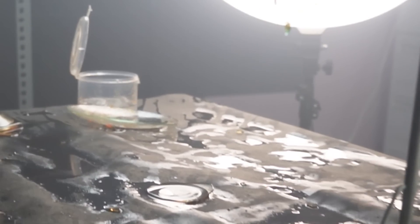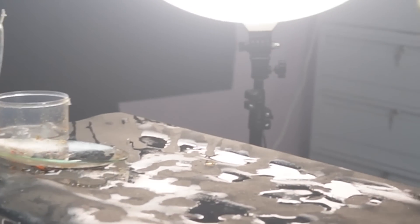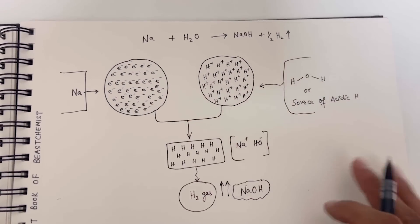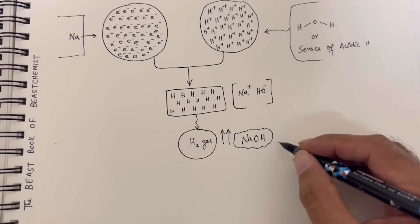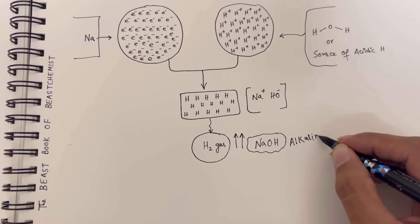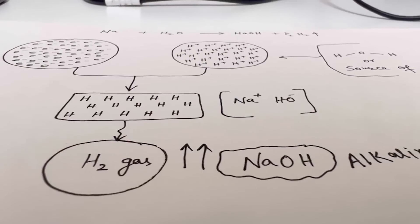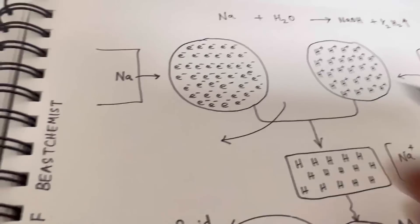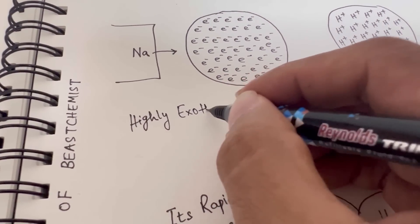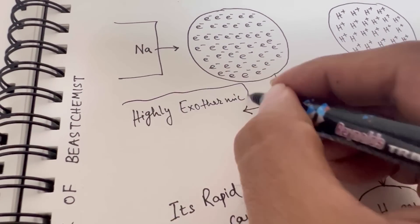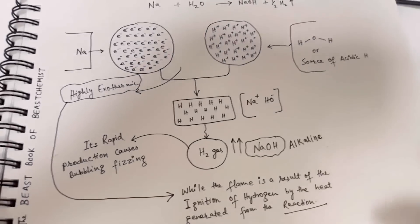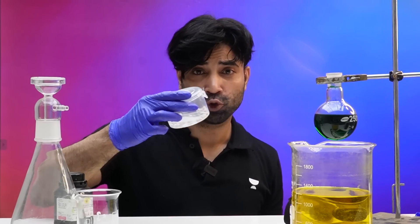After the destruction, this is the condition — but what exactly is happening? As the sodium reacts with water, it releases hydrogen gas and forms sodium hydroxide, a caustic alkaline solution. The rapid production of hydrogen gas causes the intense bubbling and fizzing, while the flame is a result of the ignition of hydrogen by the heat generated from the reaction.